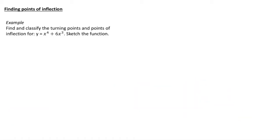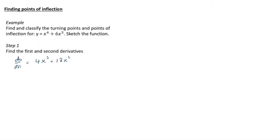The best way to get to grips with this is to look at an example. Find and classify the turning points and points of inflection for y = x⁴ + 6x³, and sketch the function. Step one: find the first and second derivatives. dy/dx = 4x³ + 18x². Differentiating again gives d²y/dx² = 12x² + 36x.